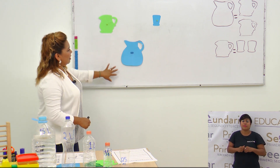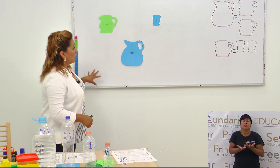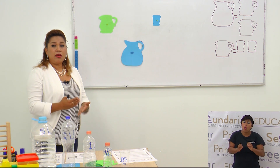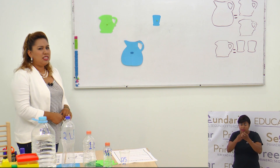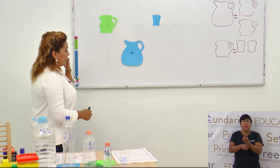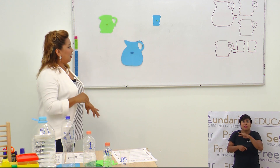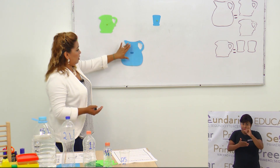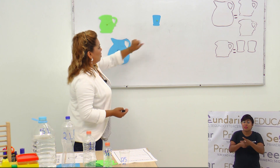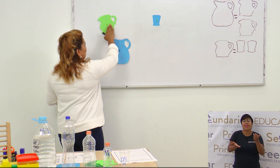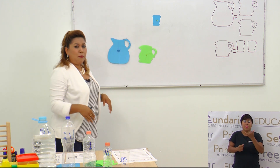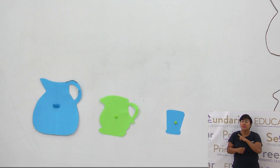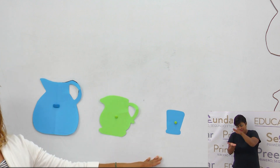Tenemos aquí tres recipientes diferentes. Vamos a ordenarlos dependiendo de cuál tiene mayor capacidad. A primera vista podemos darnos cuenta de que la más grande sería la jarra de color azul. Después seguiría la jarra verde, y el que tiene menor capacidad sería el vasito. Así ya están ordenados de mayor a menor capacidad.